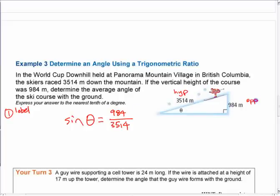How come the 984 goes on top? Yeah, that's the way it goes, right? That's the opposite, the hypotenuse. Just to make sure you've got it the right way there.